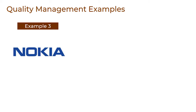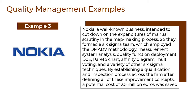The third and last example is Nokia, a well-known business, which intended to cut down on the expenditures of manual scrutiny in the mapmaking process. So they formed a Six Sigma team, which employed the DMAIC methodology, measurement system analysis, quality function deployment, DOE Pareto chart, affinity diagram, multi-voting, and a variety of other Six Sigma techniques. By establishing a qualification and inspection process across the firm after defining all of these improvement concepts, a potential cost of 2.5 million euros was saved.